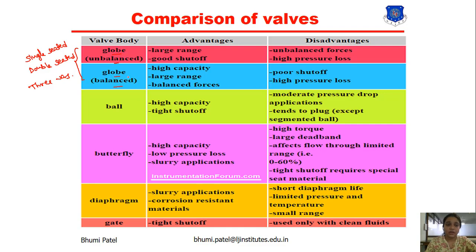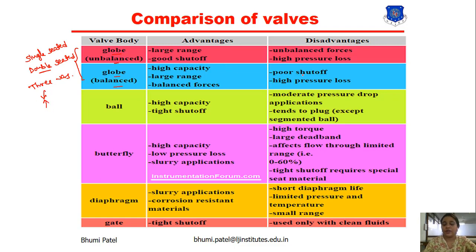For the balanced globe valve, the advantage is it is used for high capacity, large range, and balanced force. The disadvantage is that in a double seated valve balanced in the valve body, if it is not properly balanced, the disadvantage is poor shutoff and high pressure loss.